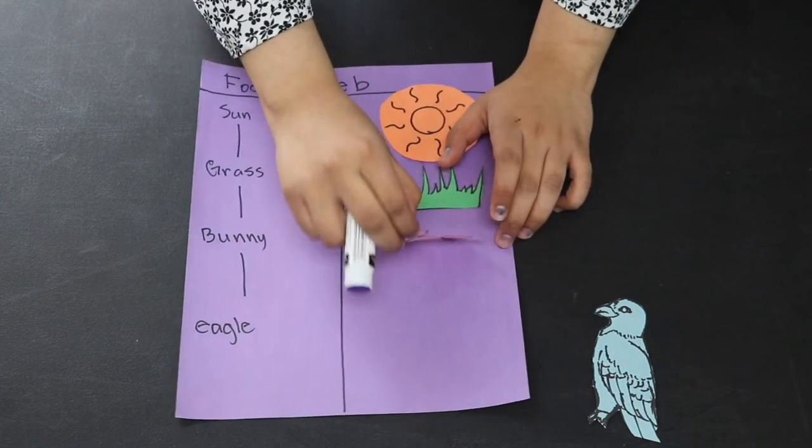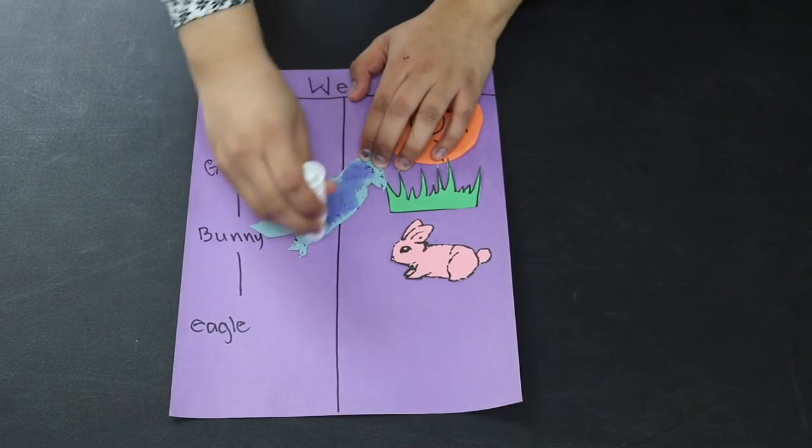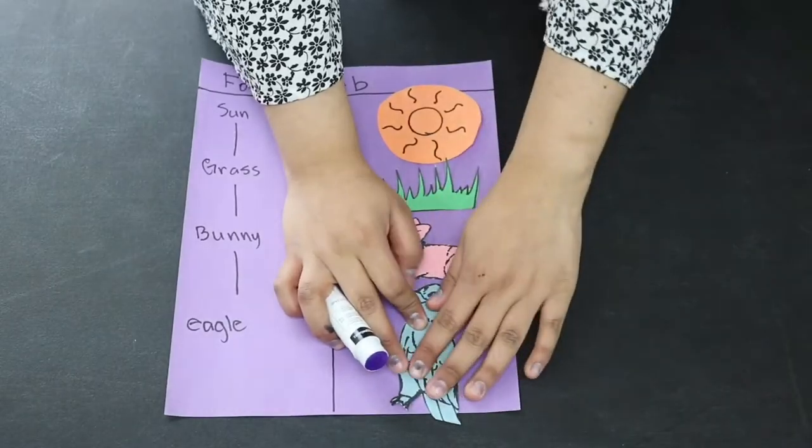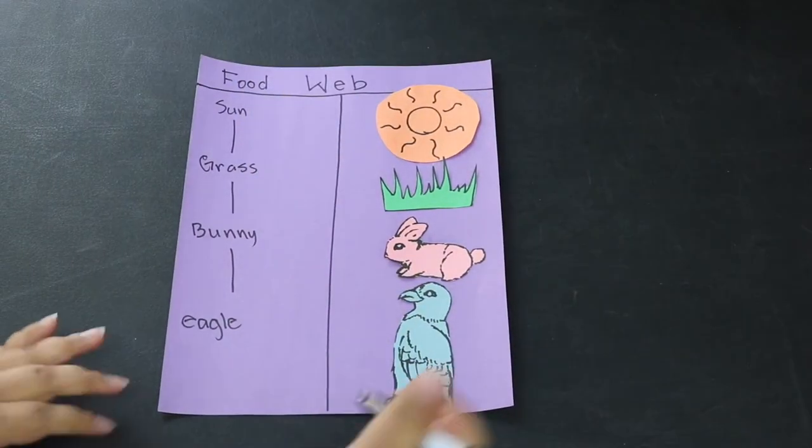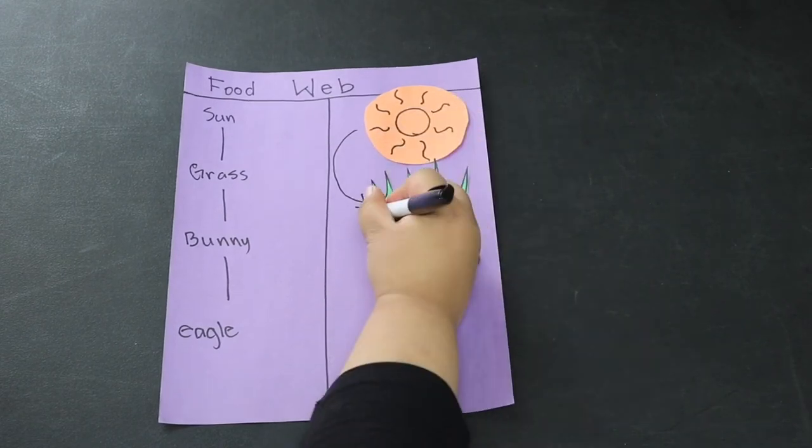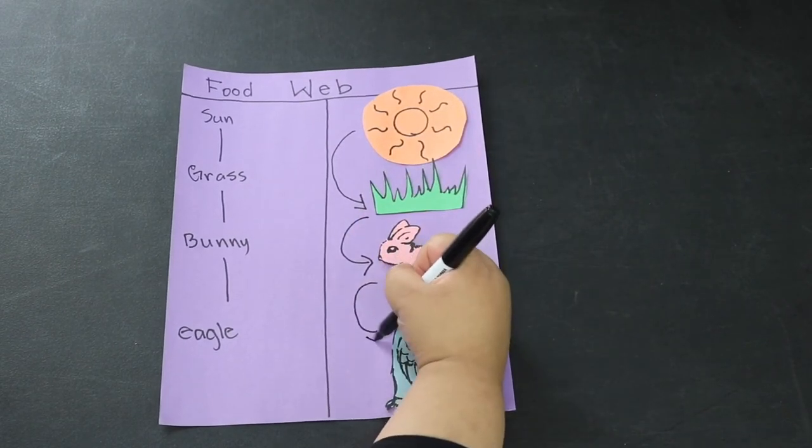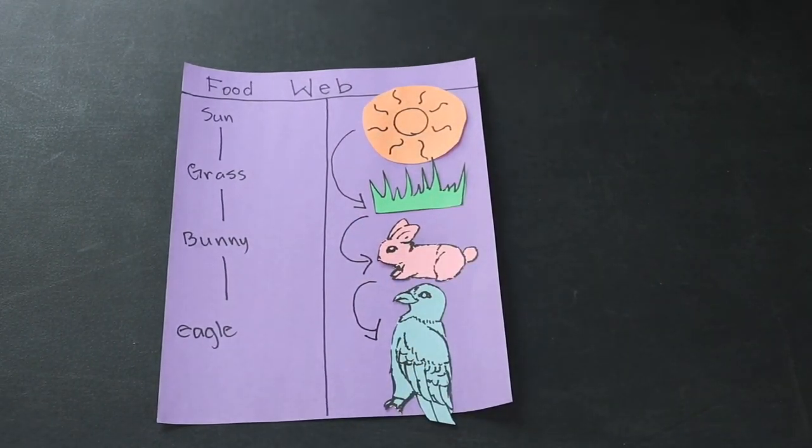And you may either draw your own pictures or you may cut them out from a magazine if you chose to use a magazine. What we have created here is a food chain. If you make more food chains, you may start connecting some things with others to create a food web.